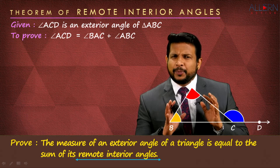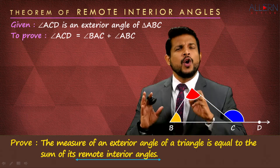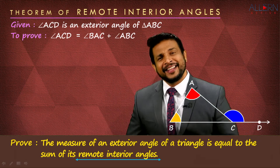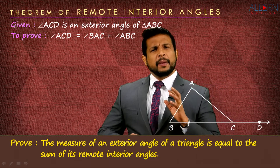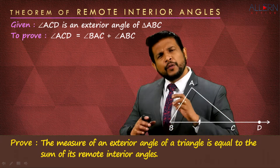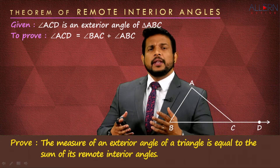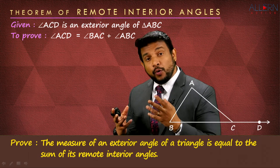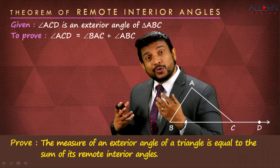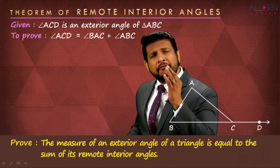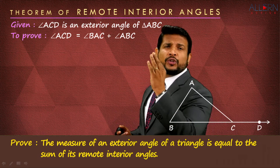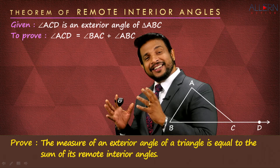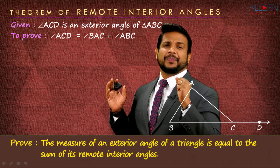Now from the statement, we know what we are supposed to draw, what is the given, and what is the to-prove. Now let's start thinking about the proof. Always remember: whenever we do any proof, the entire logic and flow depends on the to-prove. You start thinking from the to-prove and you'll get it from there.